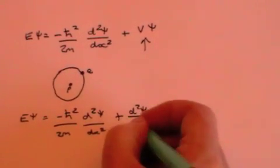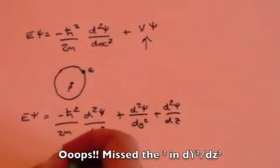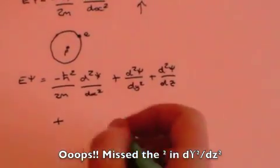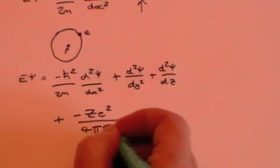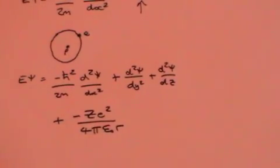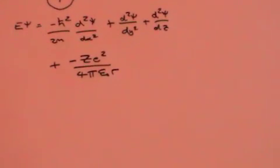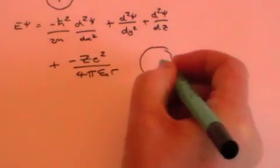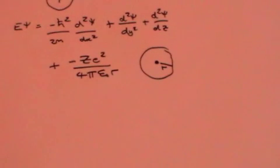...so it's d2 psi by dy squared plus d2 psi by dz squared plus a potential term, and the Coulomb term would be z e squared over 4 pi epsilon nought r, where z is 1 for hydrogen because there's only one proton in a hydrogen atom. Epsilon nought is the permittivity of free space, and r is the polar coordinate distance between the proton and the electron.